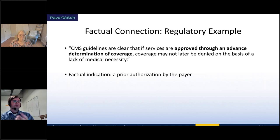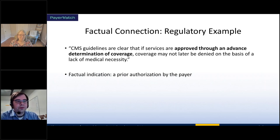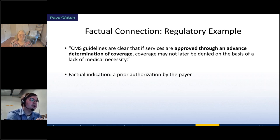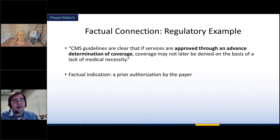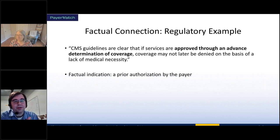What's the factual connection for the regulatory argument? The key is: was approval given through an advanced determination of coverage — i.e., was there a prior authorization? First, confirm it's the right type of plan. If it is, all you need to find is a fact indicating prior authorization. Did you find that fact? Then you can use the argument. That does not take an attorney — as long as somebody competent to read the record can find that fact, that's all that needs to be done. If the fact is there, use the argument; if not, move on.